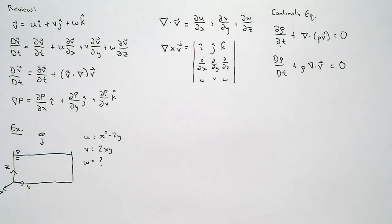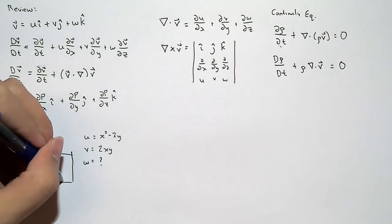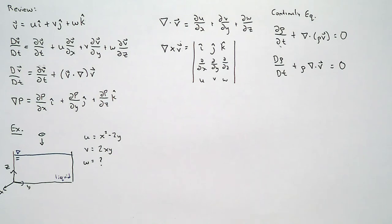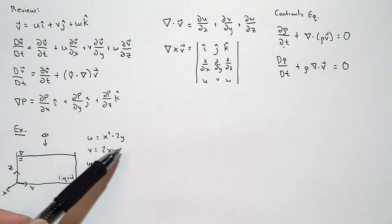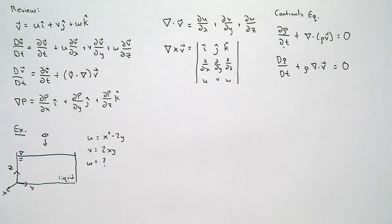We know the U component and the V component, but we don't know the Z component of velocity, because you can't precisely measure any movement towards and away from you. We're going to solve this using differential analysis. When solving a problem, we need to apply initial and boundary conditions. Initial conditions are conditions at time equals zero; our flow is steady, so no initial conditions are needed. However, we do need boundary conditions.